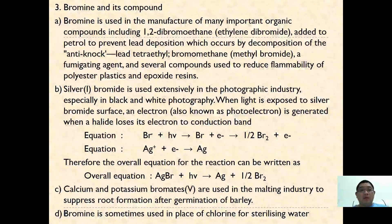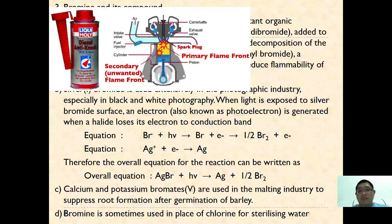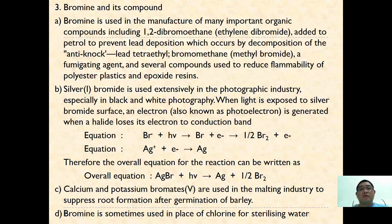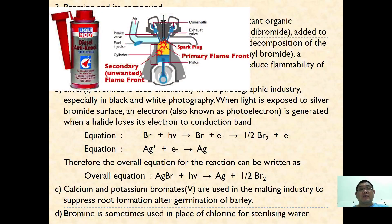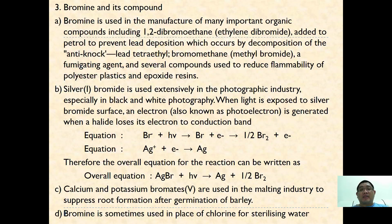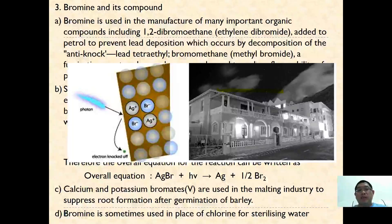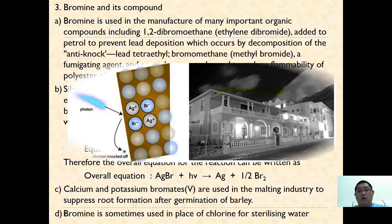For bromine, one of its most important uses and that of its compounds is in black-and-white photography. Bromine compounds also act as an anti-knock additive inside petrol to prevent knocking inside engines. Silver bromide is used extensively in the photography industry — when light is exposed to silver bromide, photoelectrons are released, enabling black-and-white photography.